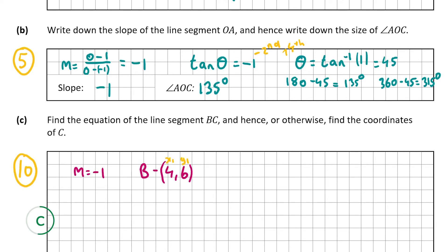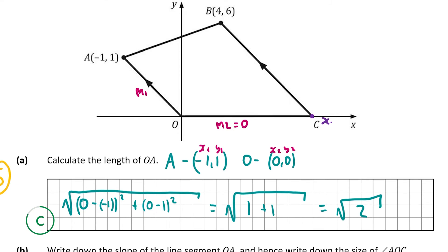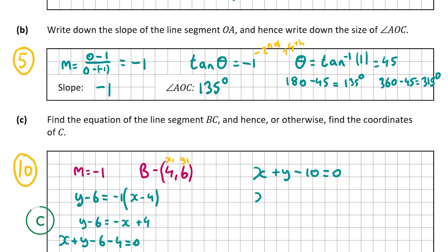With x1 = 4, y1 = 6, and m = minus 1: y minus 6 equals minus 1 times (x minus 4), giving y minus 6 equals minus x plus 4. Moving everything to the left: x plus y minus 10 equals 0. Since C is on the x-axis, y = 0, so x minus 10 = 0, meaning x = 10. Therefore the coordinate of C is (10, 0). That's the answer for part C.